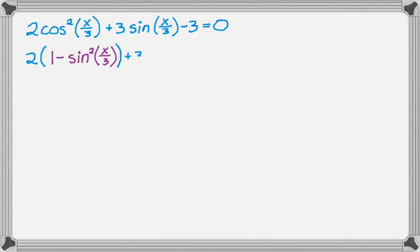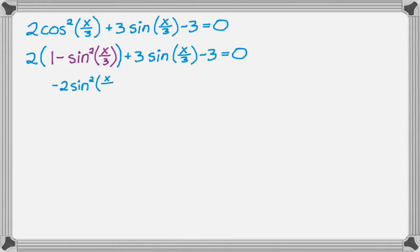When you do these things you have kind of no choice — you have to get one trig function. If you have two trig functions, unless you can group factor, you're kind of doomed. So I want to get rid of that cosine. Now I'm just going to distribute and collect some terms. I have 2 and a minus 3 which gives me the minus 1 at the end, and then minus 2 sine squared and the 3.